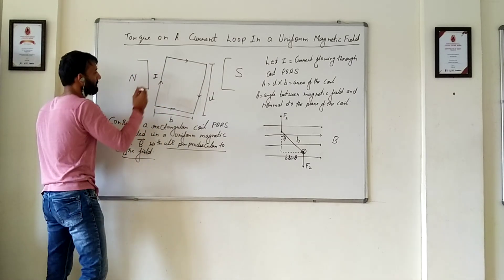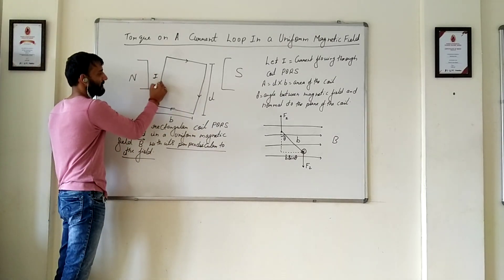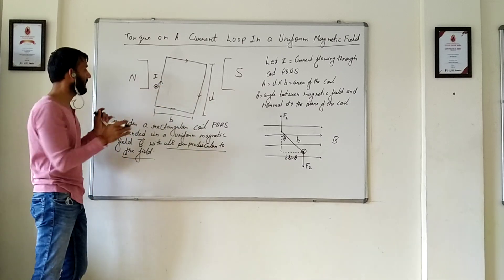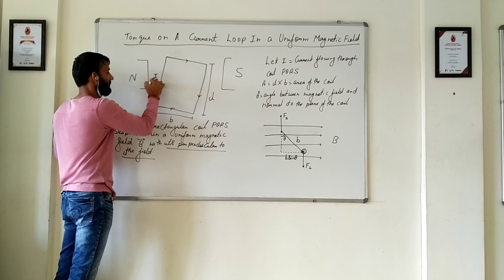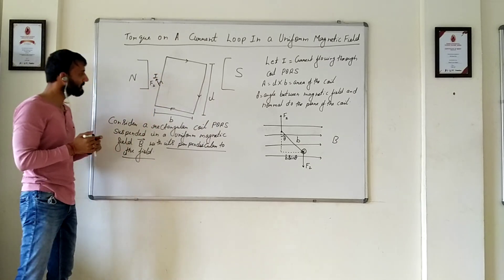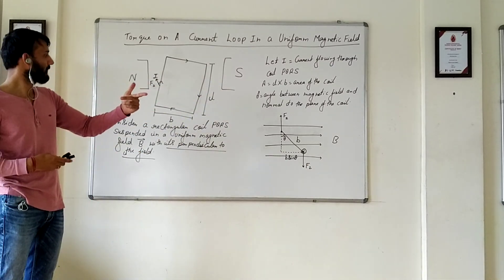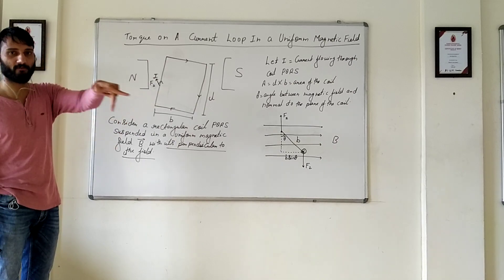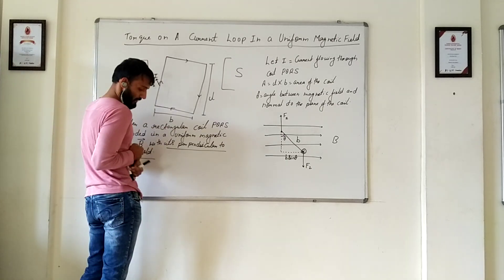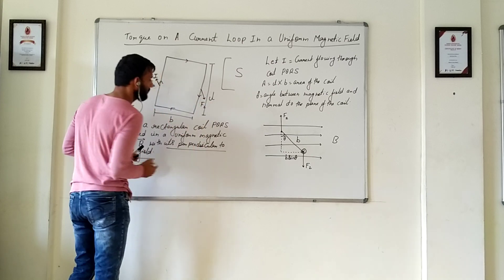So this part will experience a force in the inward direction. I am marking it as a cross — it is going inwards. So let that be F1. Now on the opposite part, the magnetic field is in this direction and the current is coming downwards, so the force is outwards. This outward force is what I call F2.